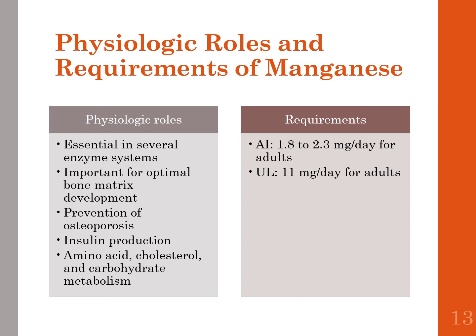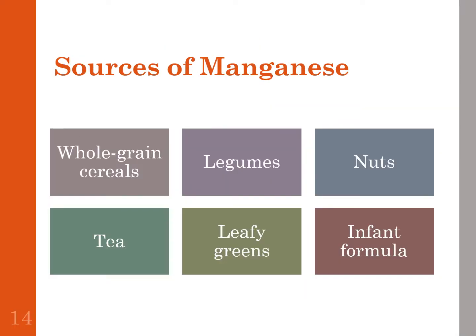Table 10.5 on page 180 shows manganese recommendations broken down by age group. The median intake for manganese in the US is 2.1 to 2.3 milligrams per day for men and 1.6 to 1.8 milligrams per day for women. The tolerable upper intake level is 11 milligrams per day for adults. Sources include whole grain cereals, legumes, nuts, tea, leafy greens, and infant formula.